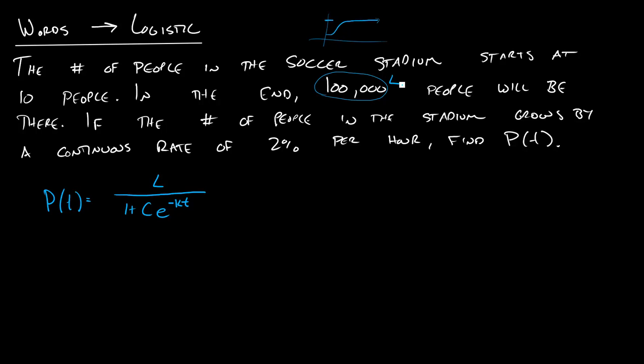There's one other easy thing for us to get from this and that is this continuous rate here. And so at the beginning of our logistic equation it grows kind of like an exponential equation and it ends up growing at this rate, at a rate of K. So this .02, that's going to be K.